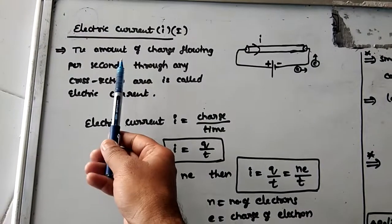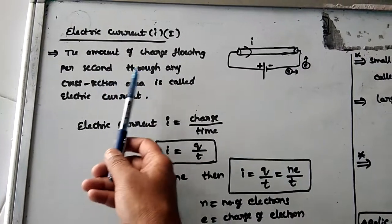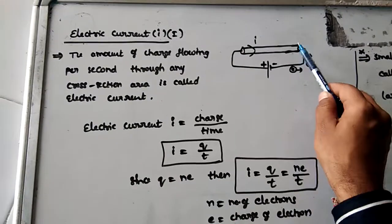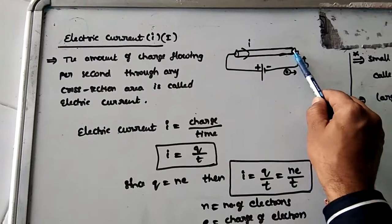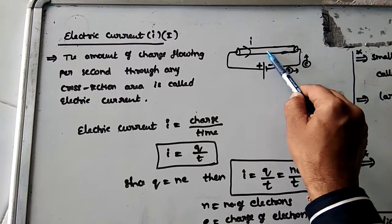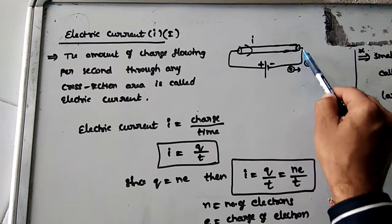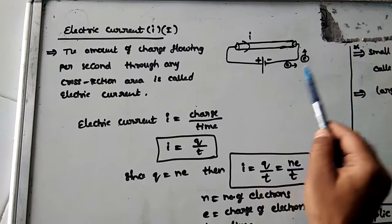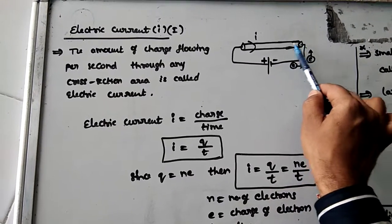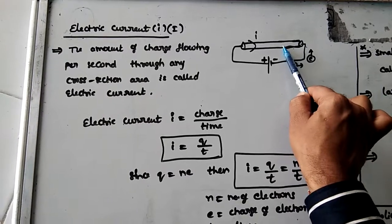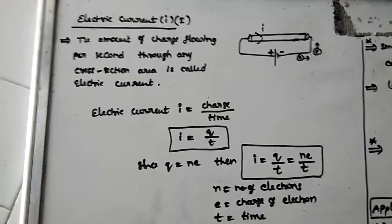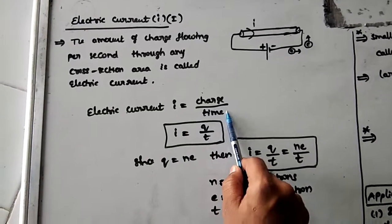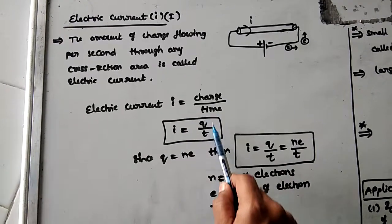Current means the amount of charge flowing per second through any cross-sectional area. The number of electrons and charge are flowing through this area, so the amount of charge flowing per second is known as electric current. Simply, current is charge divided by time: I = Q/T.